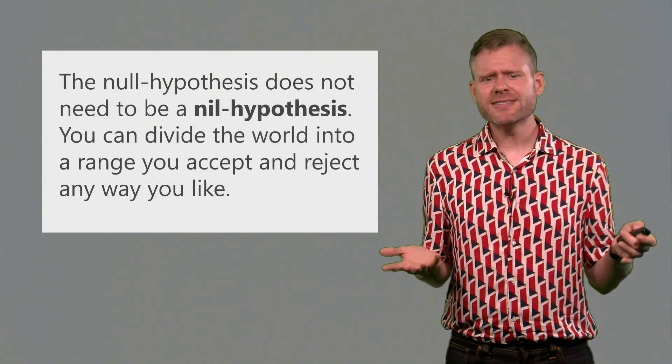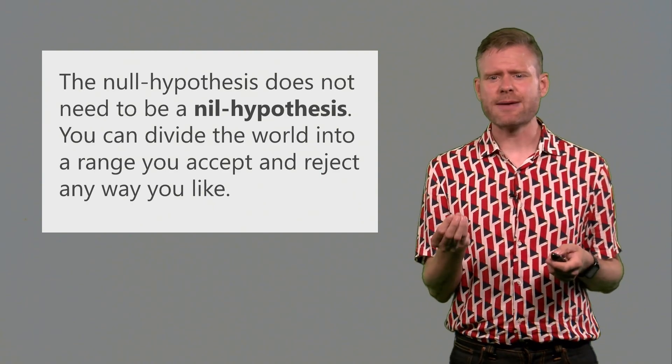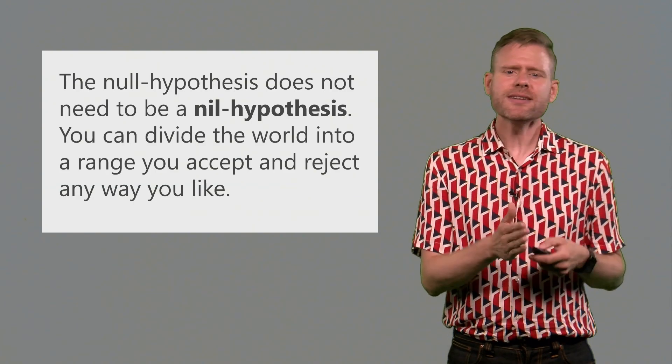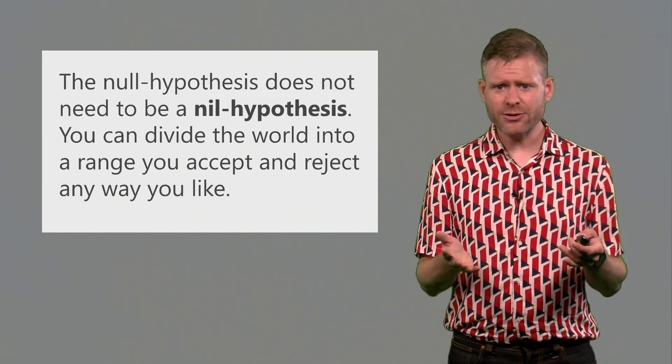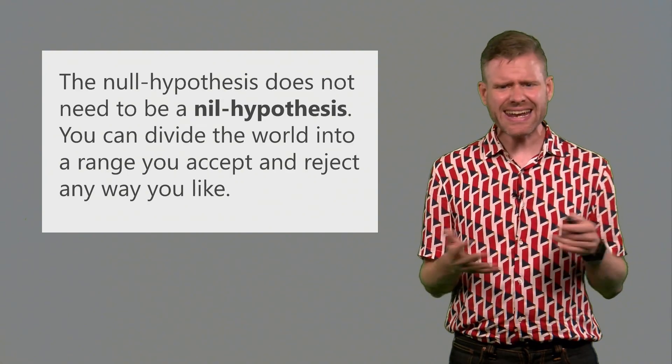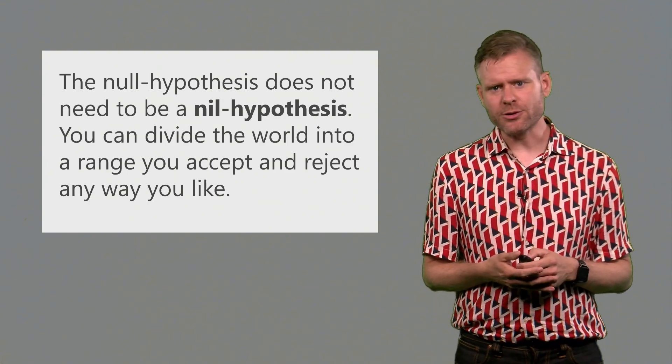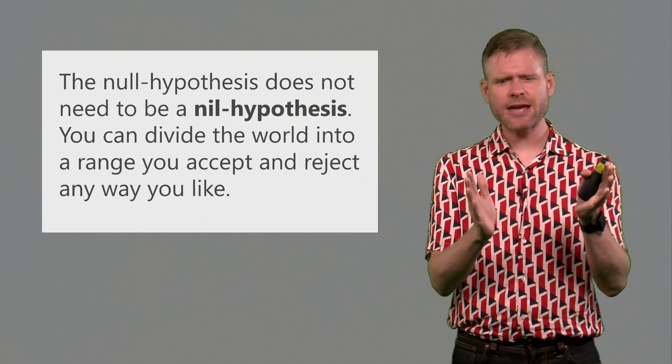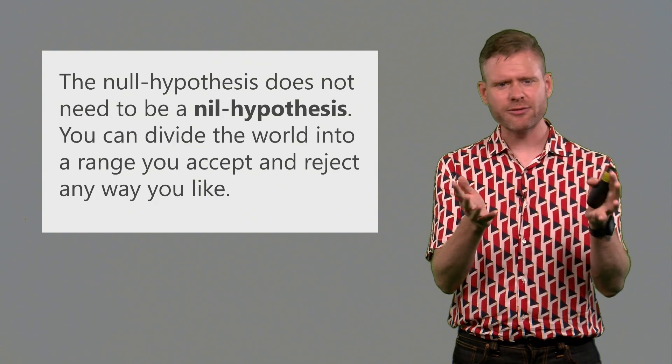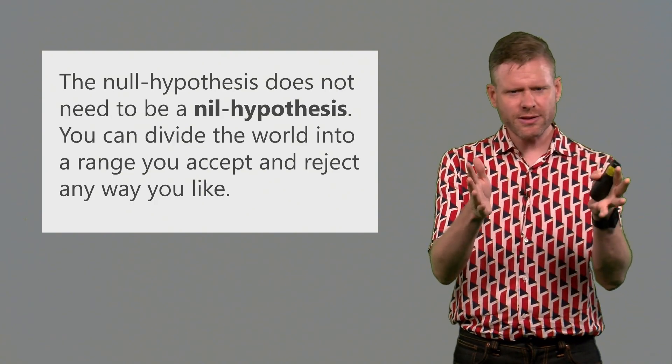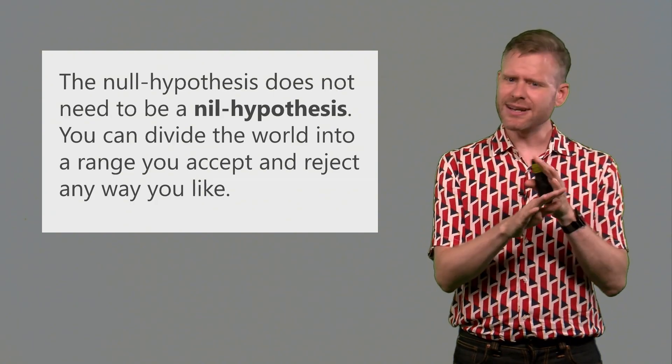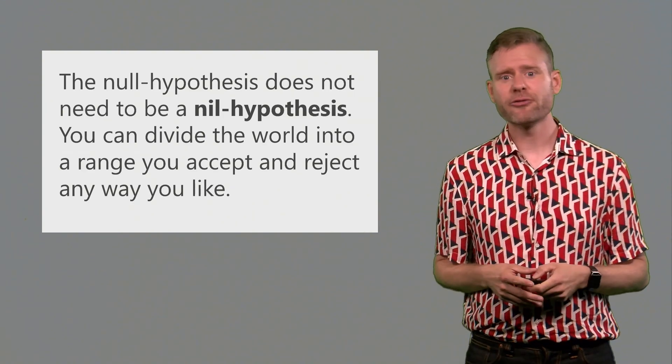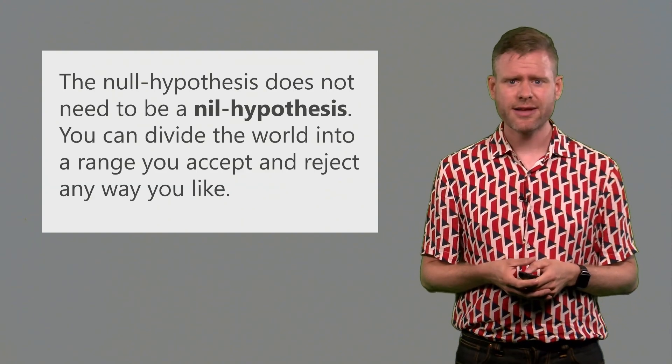Luckily, the null hypothesis doesn't need to be a nil hypothesis. You don't need to test against a value of exactly zero. You can divide the world into a range where you accept certain values and reject certain values in any way that you like. So it's perfectly acceptable to have a null hypothesis that's not a point, but a small range around zero where you say, well, there will be some systematic variation, but any value within this small range around zero, those are values that I don't predict. And anything that's large enough outside of this range, that's the stuff that I'm predicting in my hypothesis test.